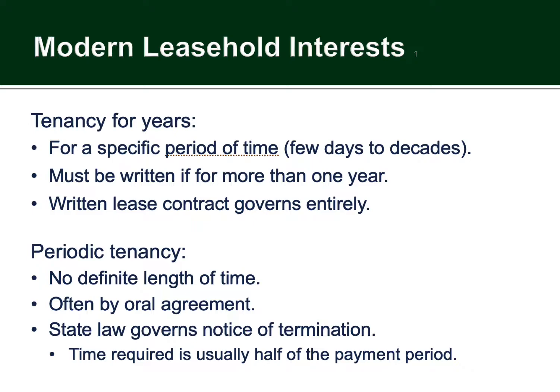Tenancy for years is another type of possessory interest — it just means that there's a specified time you can occupy the property. It's like a fancy way of saying a rental contract. If you're a renter and your contract is in writing, you have a legal real estate interest called tenancy for years. If you don't have a written rental contract, that type of thing is instead called periodic tenancy. Being in San Francisco and California, there are a lot of local and regional regulations surrounding these two types of possessory interests.